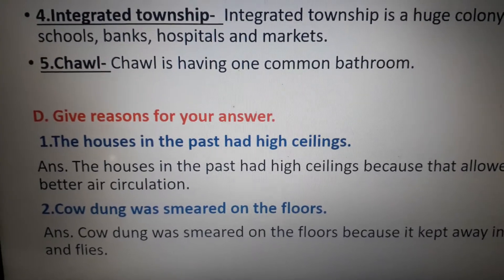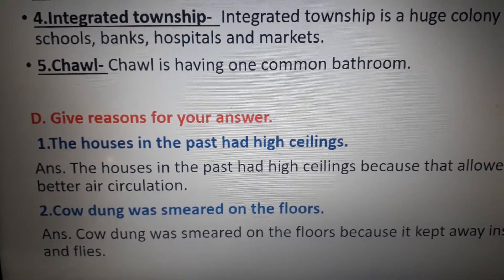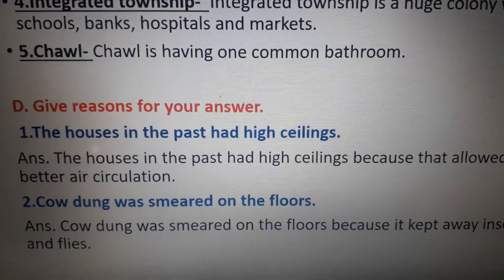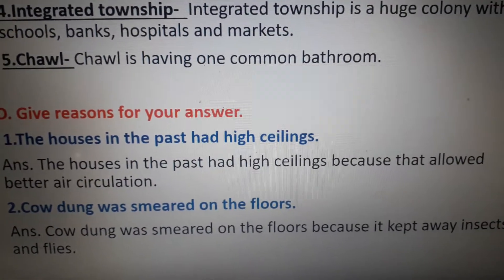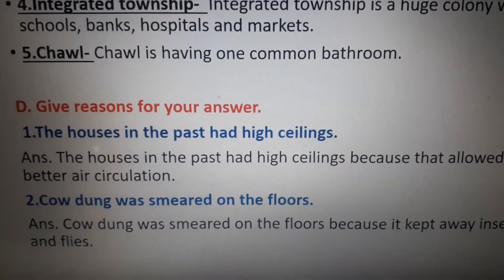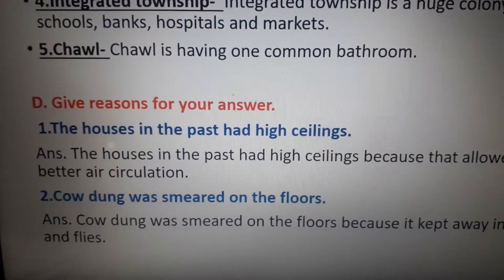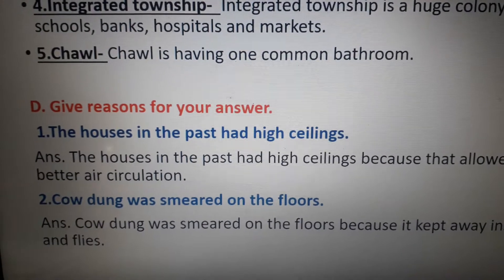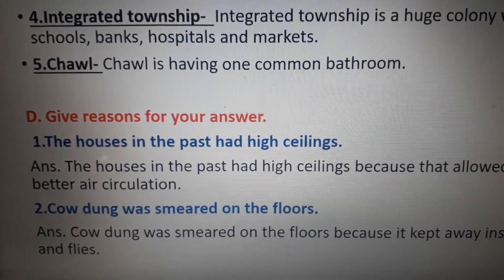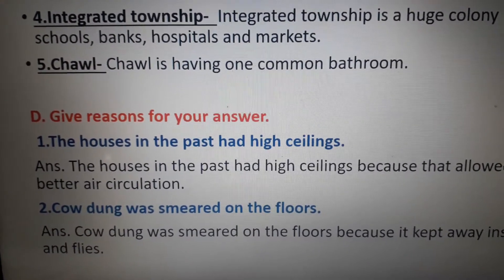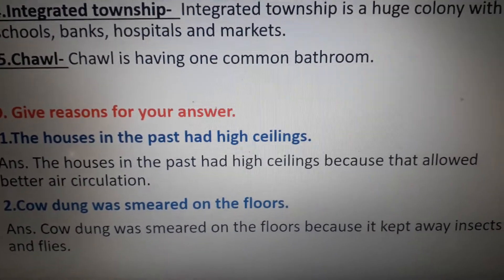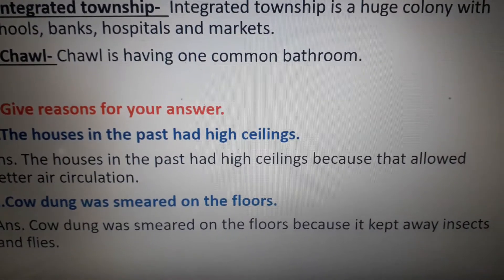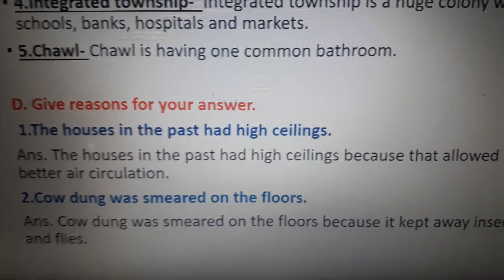Number 1: the houses in the past had high ceilings — answer: the houses in the past had high ceilings because that allowed better air circulation. Number 2: cow dung was smeared on the floors — answer: cow dung was smeared on the floors because it kept away insects and flies.